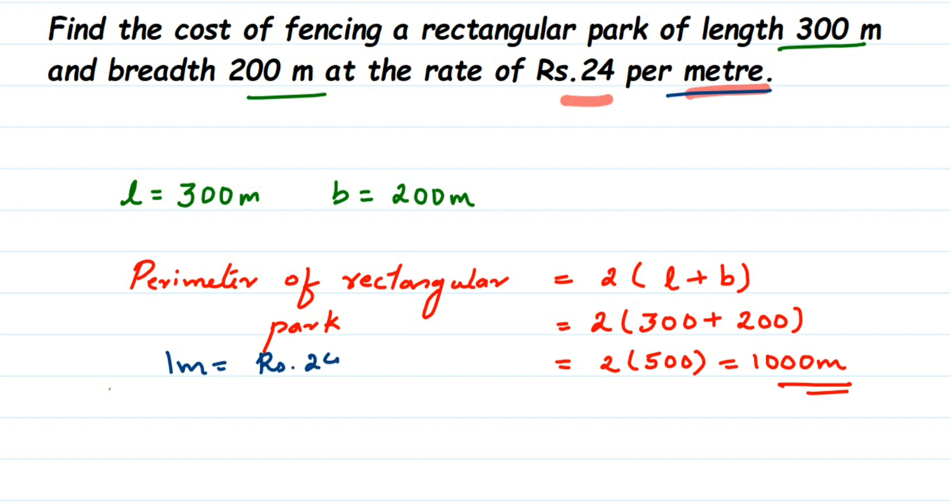So total cost for fencing will be equal to rupees 24 multiplied by 1000, which will be equal to 24,000. So rupees 24,000. So that's it, this was a simple question.